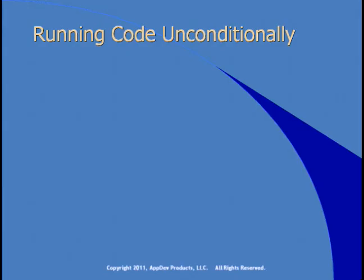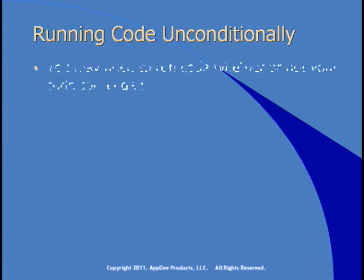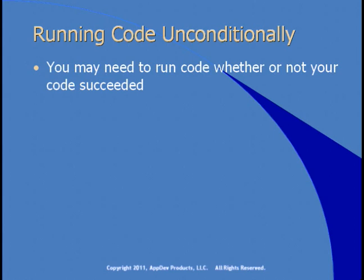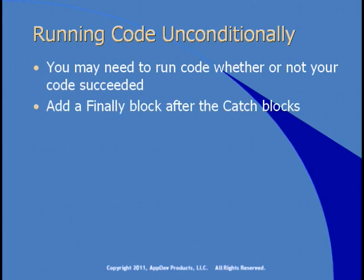The code you put in a catch block will run if an exception occurs, and at that point the runtime exits the method. There may be occasions when you need to run code whether or not the code that preceded it succeeded. For example, if you open a connection to a database and then inside a try block you have code that attempts to retrieve information, and that line causes an exception, you've exited the method without closing the database connection. What you really want is to close the connection even if the code in the try block caused an exception. To do that, you can use a finally block.